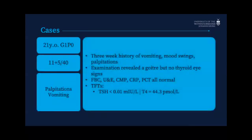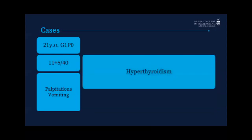Case two had a three-week history of vomiting, mood swings, and palpitations. She had a goiter but no thyroid eye signs, and everything was normal except for her thyroid functions. As much as she was vomiting and we thought this might be hyperemesis, that T4 was out of keeping. The decision was that she had hyperthyroidism — likely Graves' disease. We started a discussion with endocrine and some neomercazole to treat her symptoms.